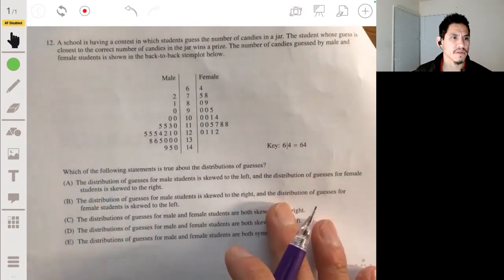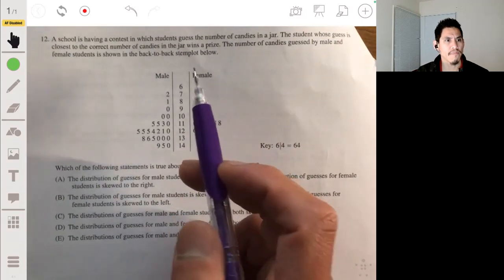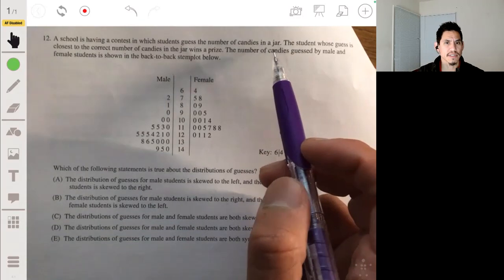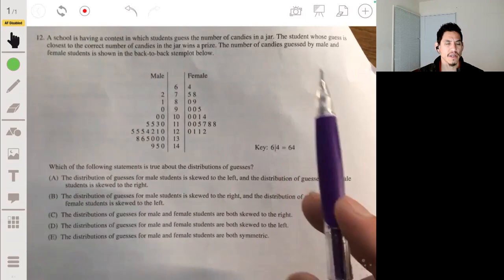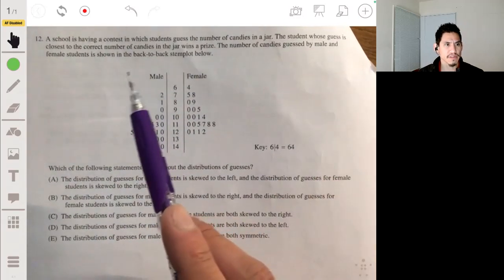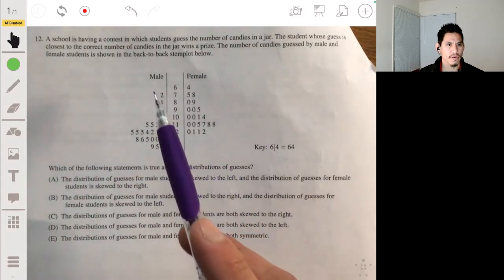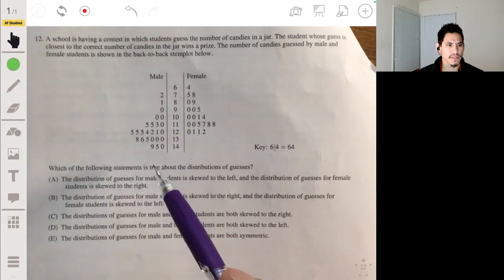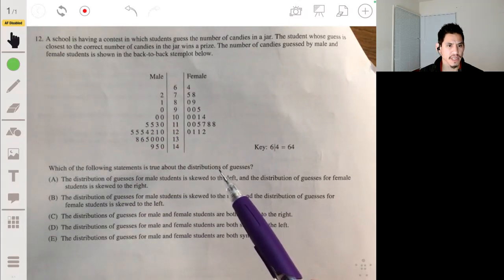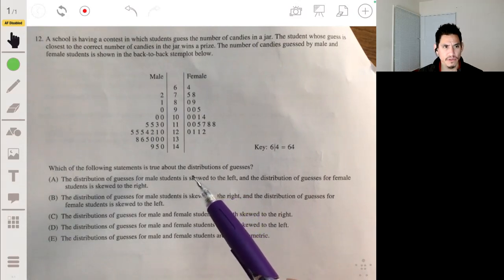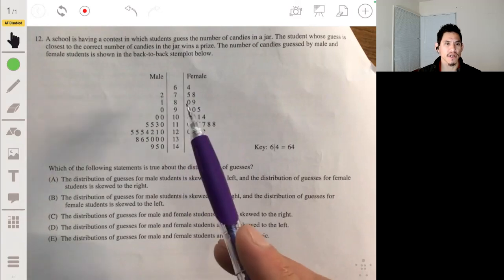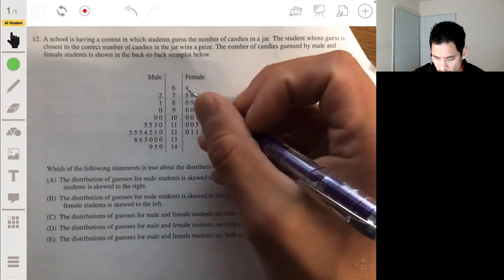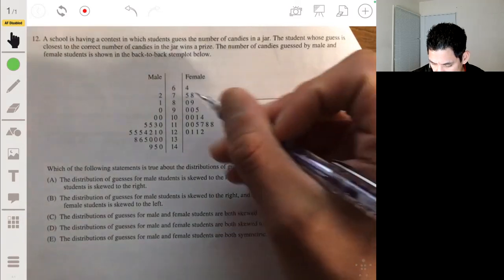Right 12, a school is having a contest in which students guess the number of candies in a jar. The student whose guess is closest to the correct number of candies in the jar wins a prize. The number of candies guessed by male and female students is shown in the back-to-back stem plot below. Okay. So which of the following statements is true about the distributions of guesses? So, looks like they want to see if you can recognize what shape each of these are.